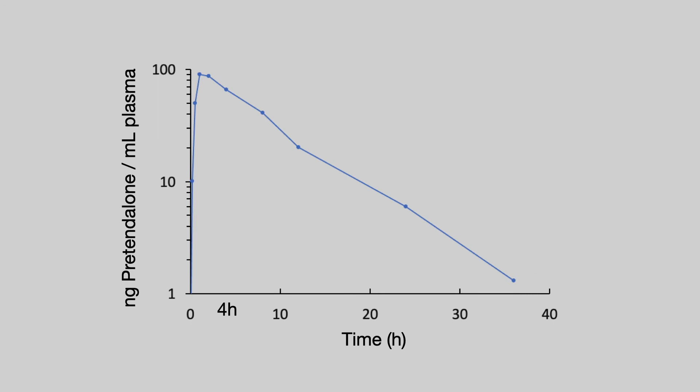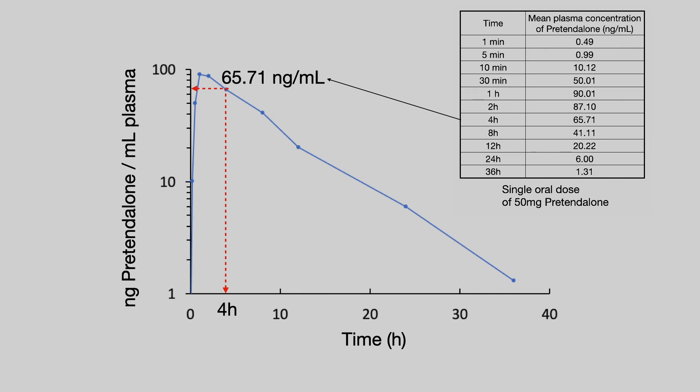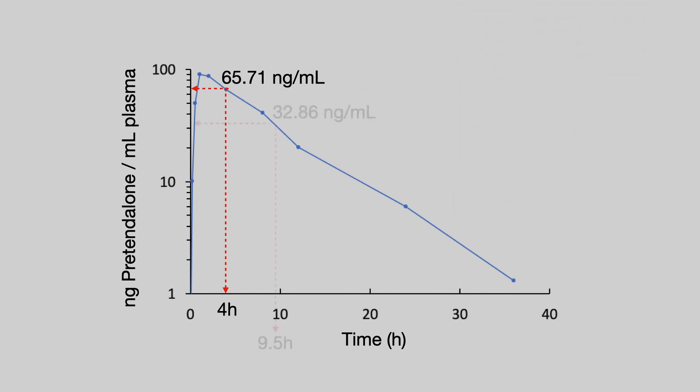Here's the semi-log plot for the oral dose of pretendalone and here is the table of data that go with that plot. Just as we did with the elimination rate constant, we have to calculate the half-life along the elimination phase of that plot. So let's take four hours and a drug concentration of 65.71 nanograms per ml as our starting point. What we want to know is how long does it take for that drug concentration to fall by half.